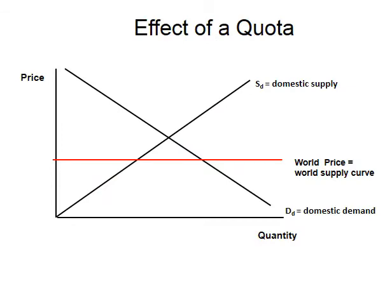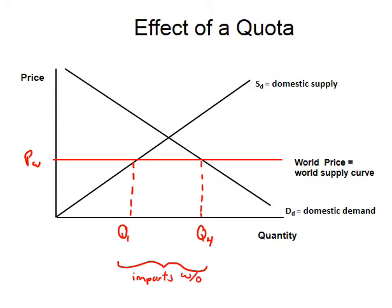Let's draw our first quota graph. Just like with the tariff, first look at what's happening before we impose any protectionism. Label the world price as PW, which also equals the world supply curve — please include both labels. Bring this down to Q1 as domestic supply, and Q4 as the domestic demand at the world price — whether for imports or domestically produced goods. Q4 minus Q1 are the imports without the quota.